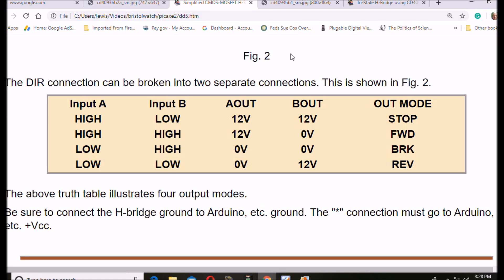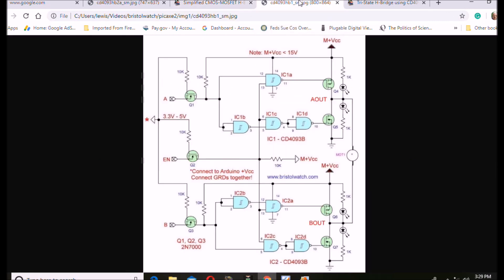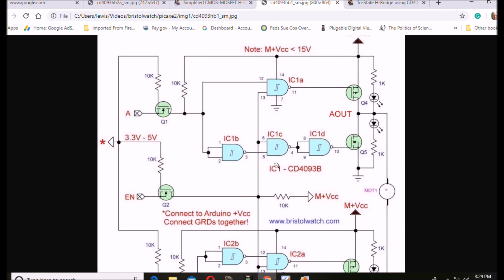This is the circuit that you saw operating at the beginning of this video. Now, we have three inputs: an enable, A, and B.